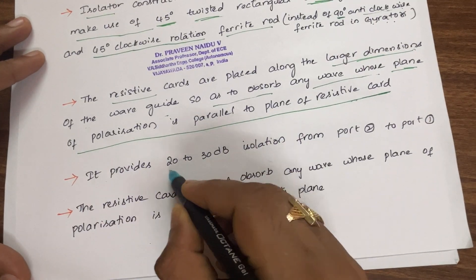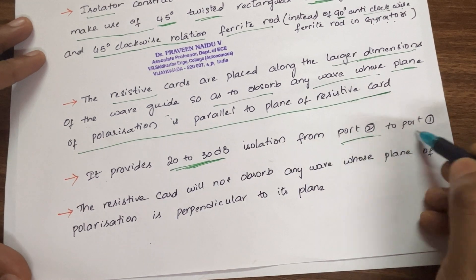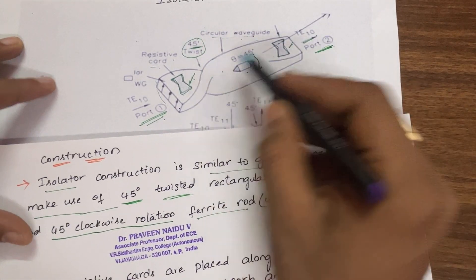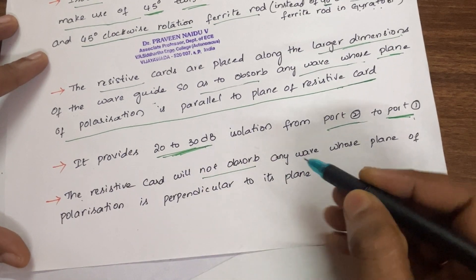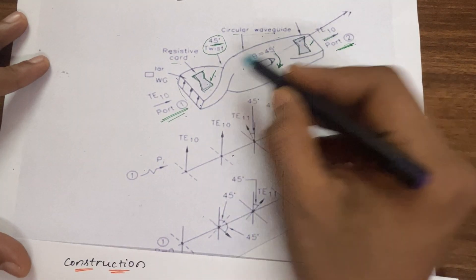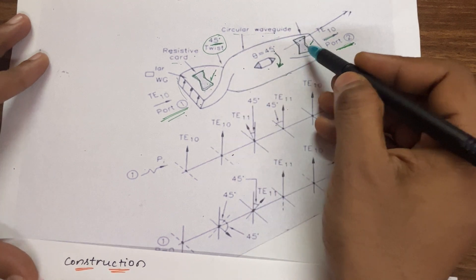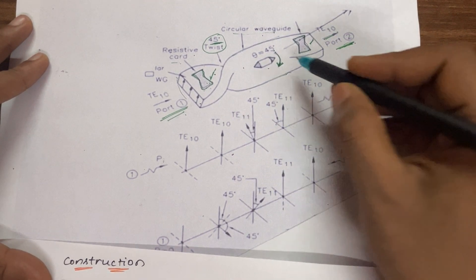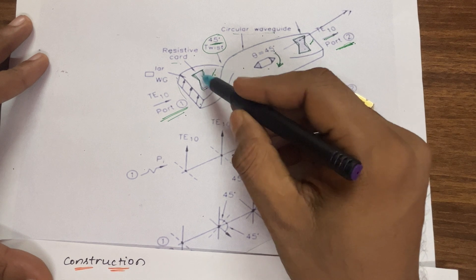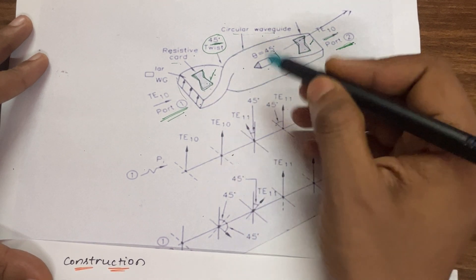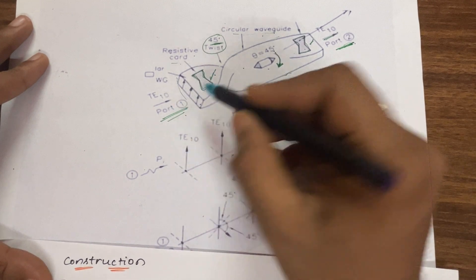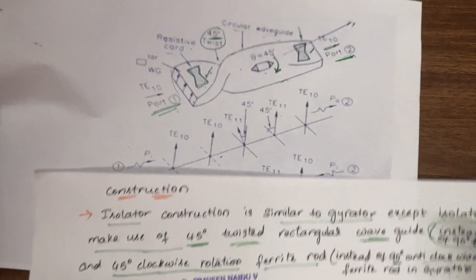This isolator provides 20 to 30 dB isolation from port 2 to port 1. The resistive cards will not absorb any wave when the plane of polarization is perpendicular to the card plane. So, whenever any wave has a plane of polarization parallel to the resistive card plane, the wave is absorbed; if the plane of polarization is perpendicular to the resistive card plane, nothing is absorbed and the wave comes out as output at the respective port.